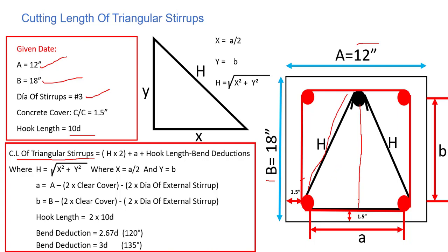We need to find this value where x is equal to a by 2 — that is, from the center to one side — and y is equal to b. So we need to find x and y in order to find h.